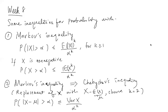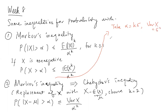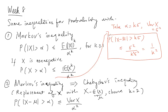Chebyshev's inequality is a special case of Markov's inequality. In some textbooks you may have come across a formula where you set alpha equal to k*sigma, where variance of X is sigma squared. Then you get the result bounded by 1 over k squared.